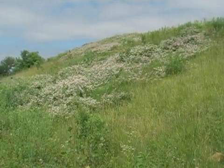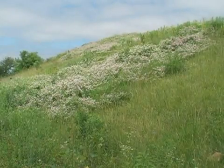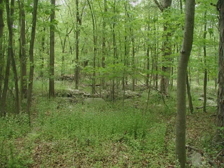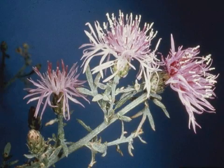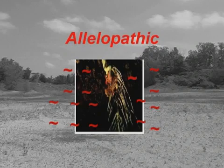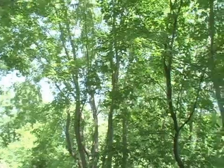Some invasive species even go so far as to affect the soil. Garlic mustard, for example, will actually inhibit the growth of seedlings for maples and other hardwoods. And species such as spotted knapweed are allelopathic, which means their roots exude chemicals that inhibit the germination of other native species. So it's not just above-ground effects, but below-ground effects as well.